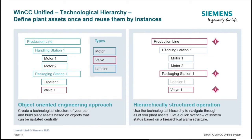Technological hierarchy is an object-based engineering approach that allows you to create standard structures within your plant. These structured objects contain graphics, tags, alarms, messages, and actions associated with objects on the machine or in the plant. It acts as a folder structure where the top-level folder represents your plant, first-level folders represent different parts of your plant, and each folder contains different pieces of equipment within that area. Technological hierarchy also functions in runtime, where you can use the structure to view plant statuses and navigate through different objects.